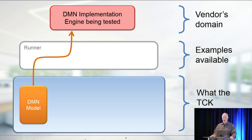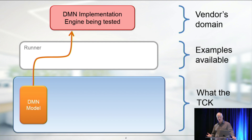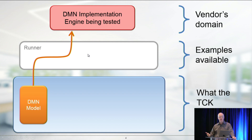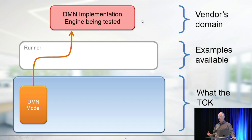In the structure diagram, we're showing the DMN model at the bottom. On top of that is the runner. The DMN spec defines what the models are and how the model should execute, but it doesn't define the programming interface to the engine. So we have several different runners available - there's a Java runner and a JavaScript runner, and a couple different options. You may have to write your own runner to run the tests. At the top is the vendor's domain, which is the vendor's implementation of DMN that executes the tests.